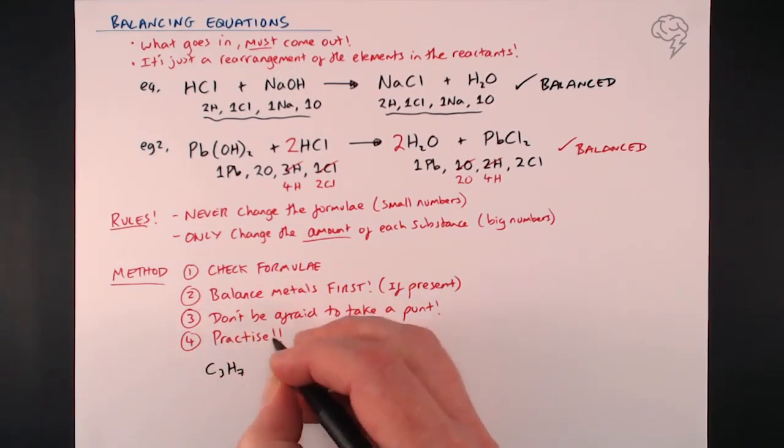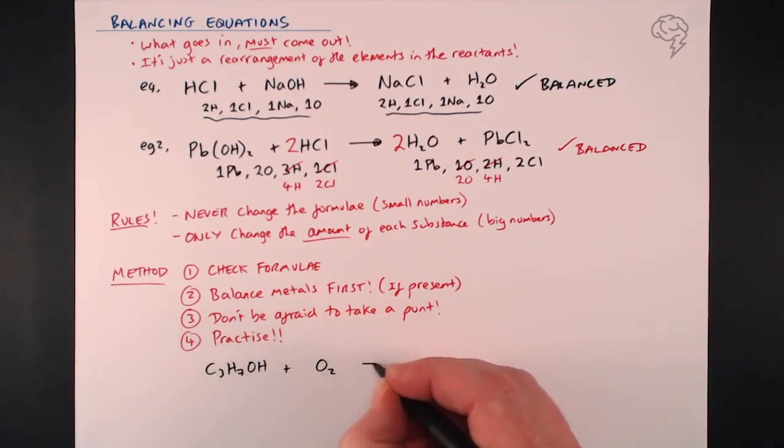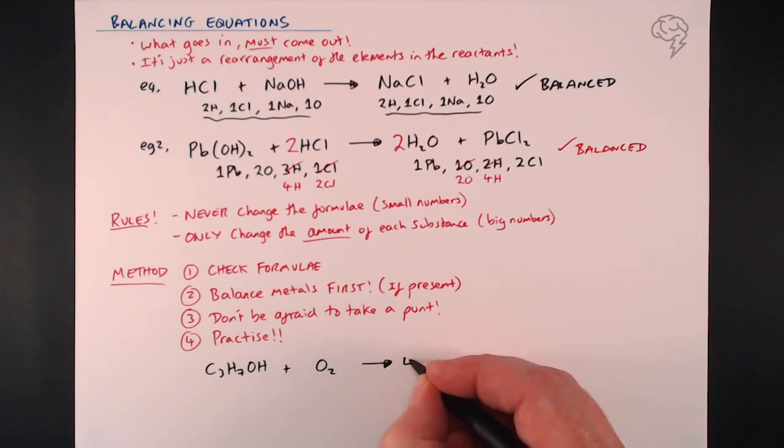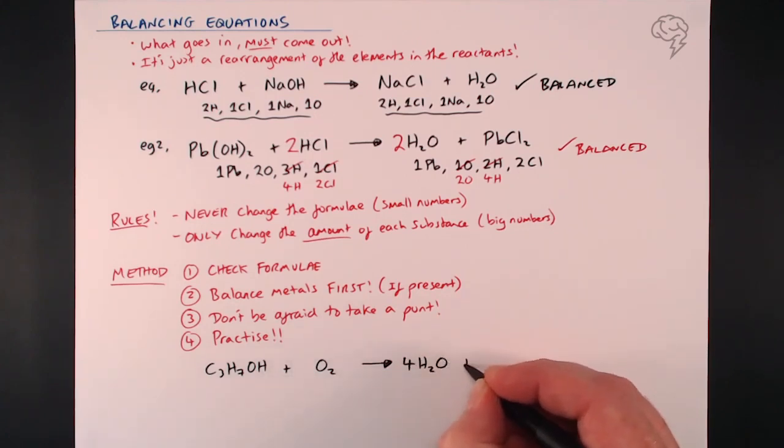Now one last thing I want to tell you before we finish up on this video: in this equation here we've got the burning of propanol - propanol reacting with oxygen to give four waters and three carbon dioxide. This is only part balanced. On the right hand side here we've got 10 oxygens.